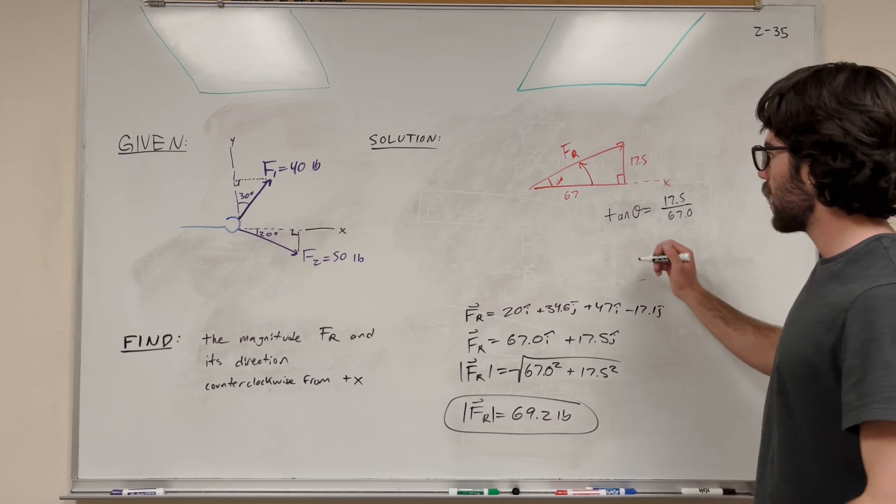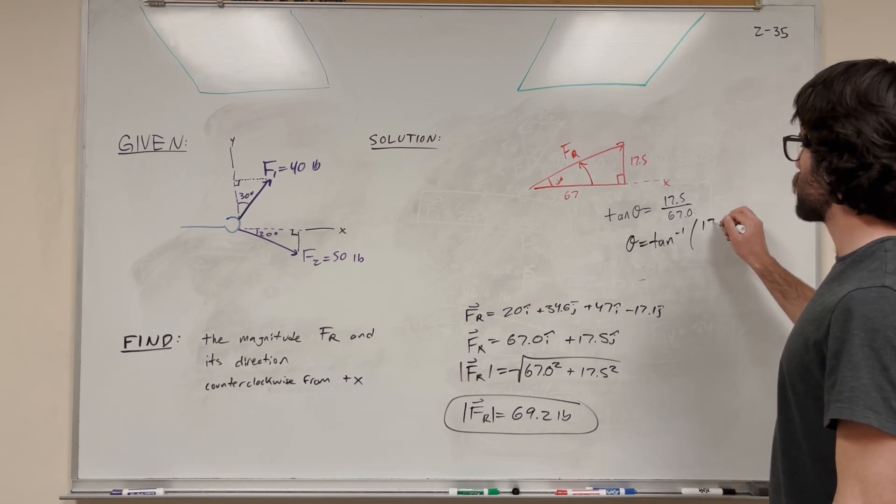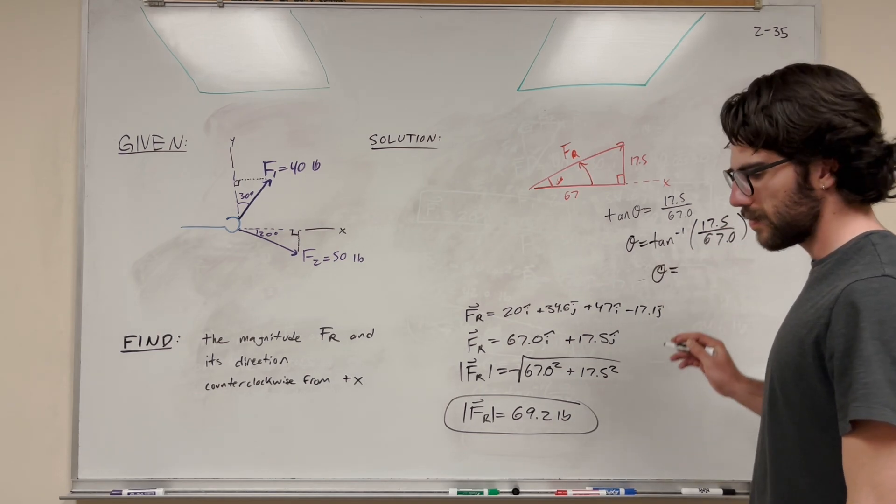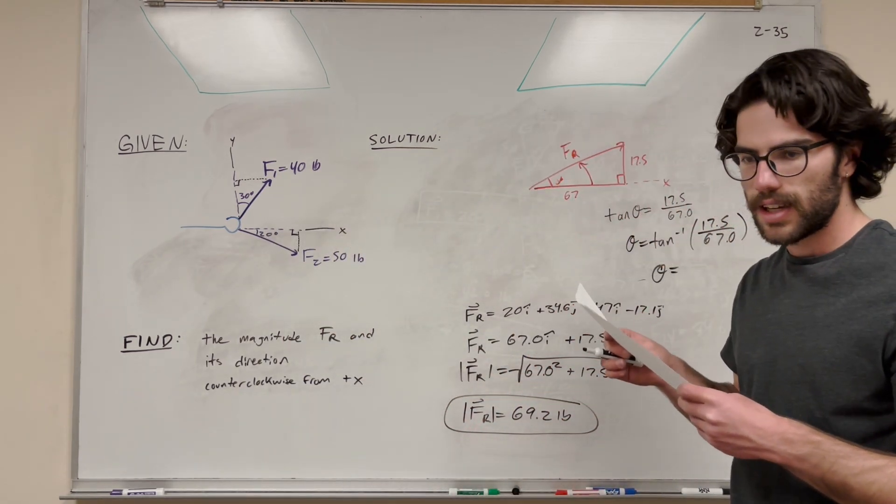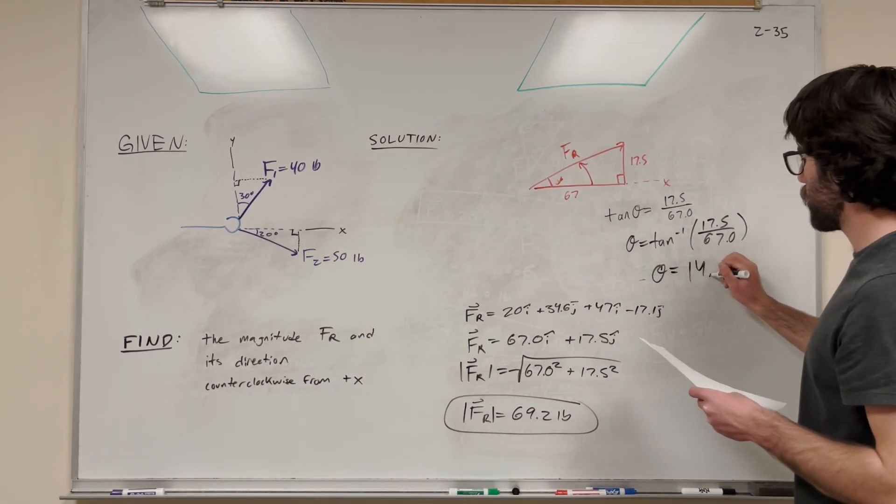Then we're going to take inverse tangent to get theta equals inverse tangent of 17.5 over 67. And then just doing that, you get that is 14.7 degrees.